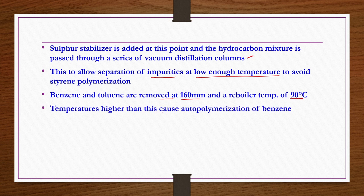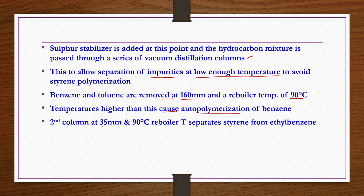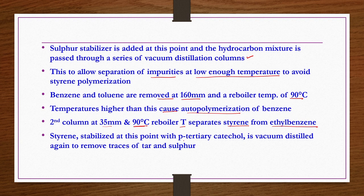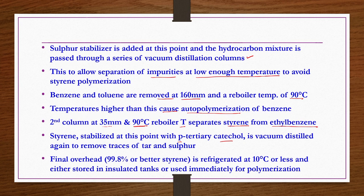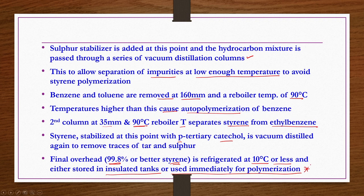Temperatures higher than 90°C can cause autopolymerization of styrene. The second column operates at 35 mm and a 90°C reboiler temperature to separate styrene from unreacted ethylbenzene. Styrene is stabilized with para-tertiary catechol, then vacuum distilled again to remove traces of tar and sulfur. The final overhead product, having 99.8% or higher purity styrene, is refrigerated at 10°C or lower and either stored in insulated tanks or used immediately for polymerization.